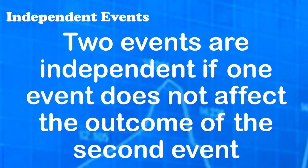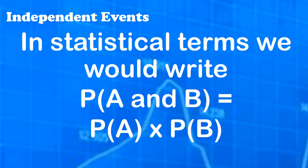Two events are independent if one event does not affect the outcome of the second event. In statistical terms, we would write the probability of event A and B is equal to the probability of A times the probability of B.